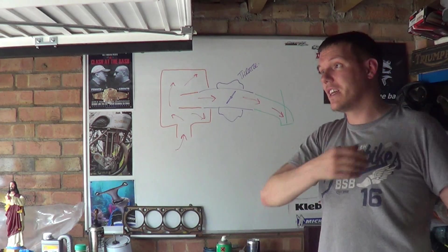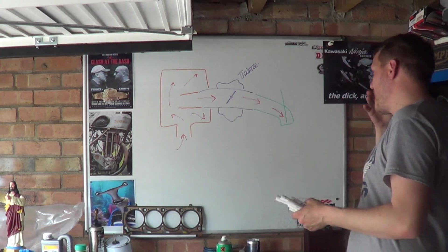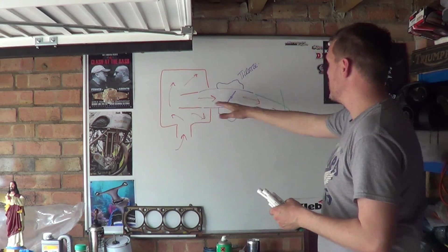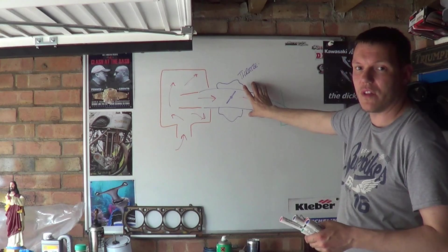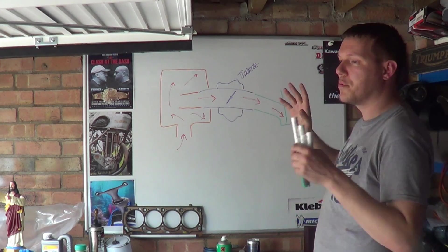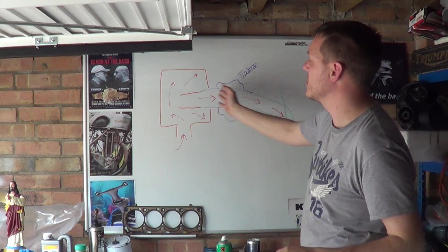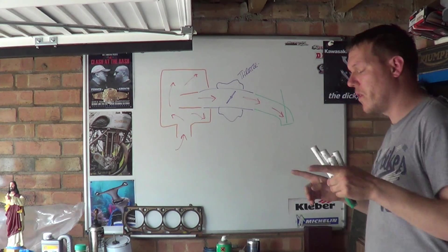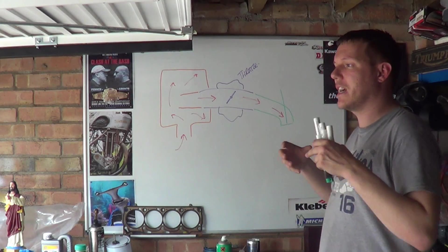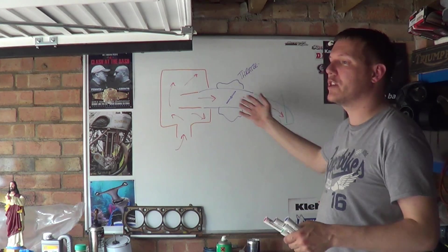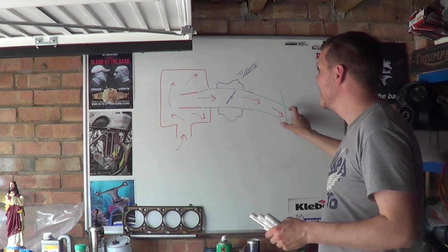As this all starts to slow down, this is higher pressure. This is now higher pressure than all this because this has all got velocity which means it's dropped some of its pressure. So then a pressure wave then starts to go back. Now it's not the air that's really going back, it will do, it'll start to expand a bit, but it's more of a pressure wave. It's a density that goes back.